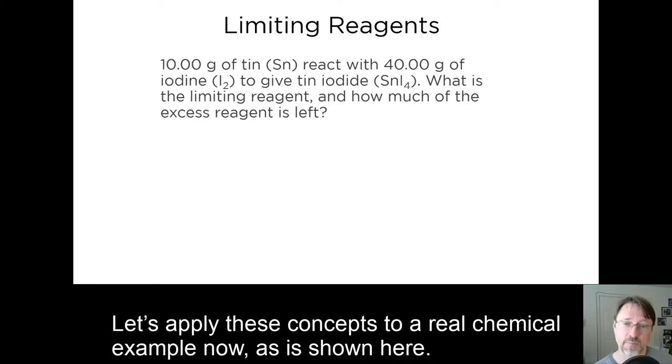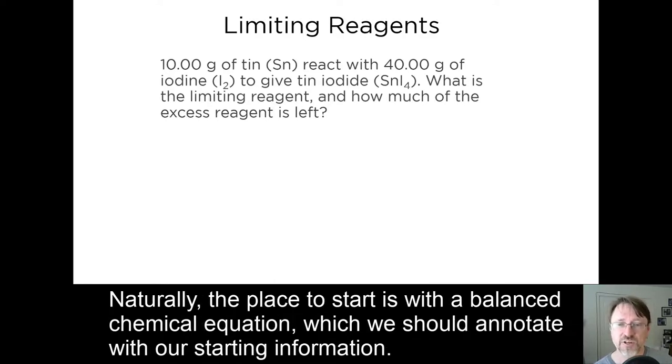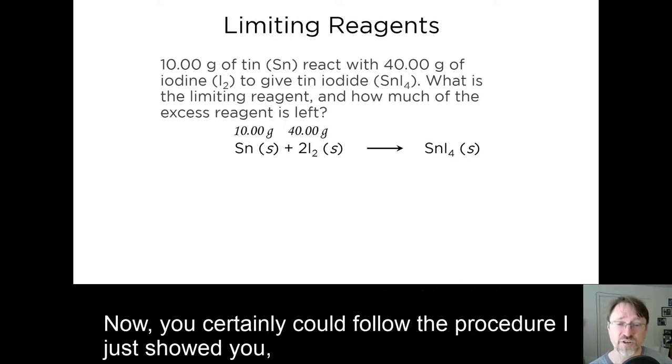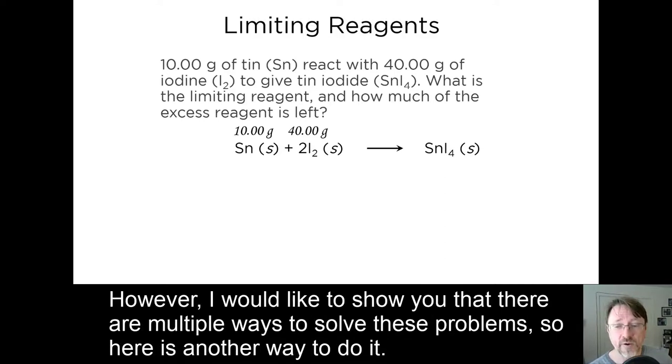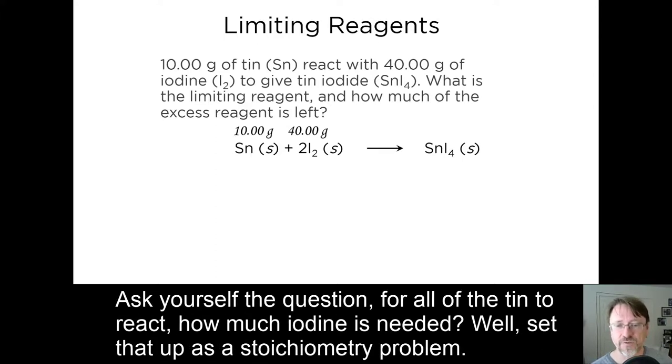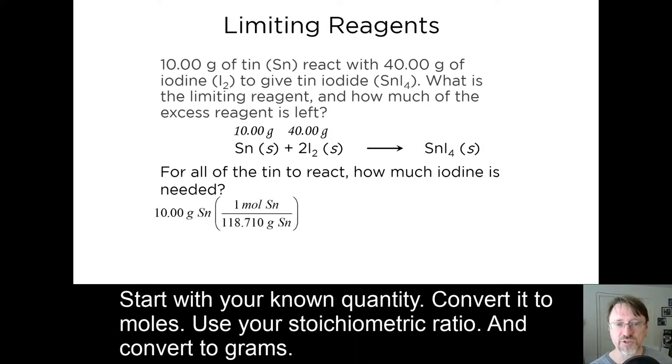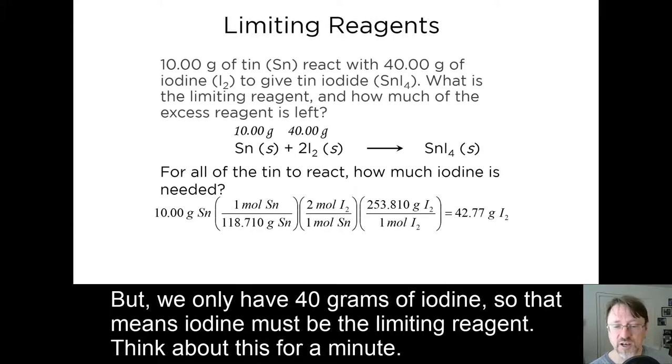Let's apply these concepts to a real chemical example now, as shown here. Naturally, the place to start is with the balanced chemical equation, which we should annotate with our starting information. Now, you could certainly follow the procedure I just showed you, where you make two different hypotheses about which is the limiting reagent, and test to see which hypothesis is correct. I encourage you to pause the video and run through that yourself. However, I would like to show you that there are multiple ways to solve these problems. So here's another way to do it. Ask yourself the question, for all of the tin to react, how much iodine is needed? We'll set that up as a stoichiometry problem. Start with your known quantity, convert it to moles, use the stoichiometric ratio, and convert to grams. But we only have 40 grams of iodine. That means the iodine is the limiting reagent.